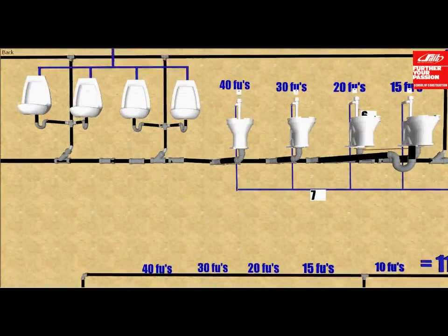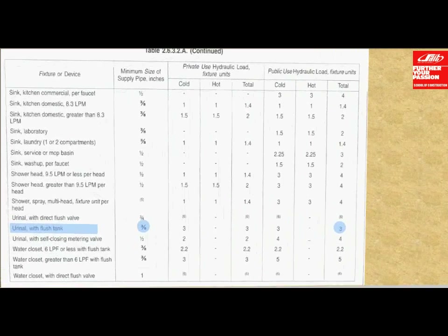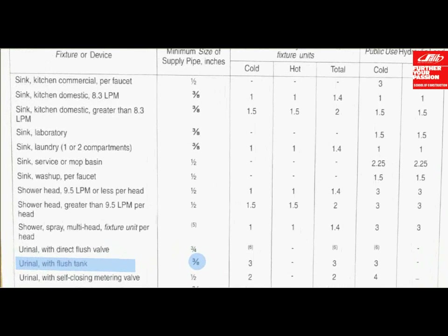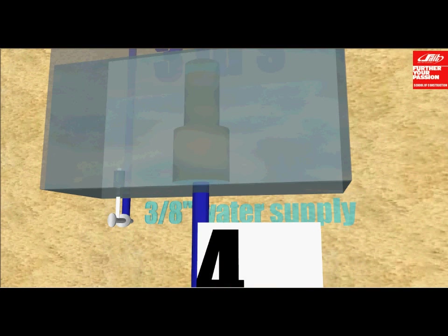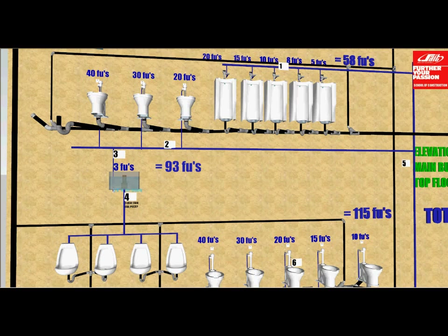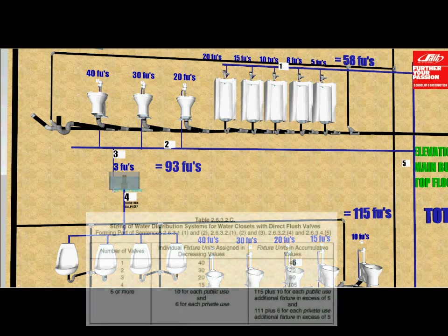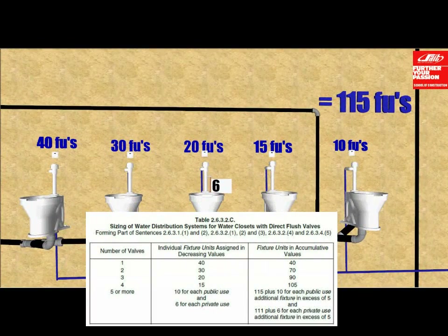We arrived at the 3 fixture unit load for the urinal flush tank by looking at table 2632A. On the farthest right column, it shows a hydraulic load of 3 fixture units. On the left, the minimum supply size is three-eighths of an inch — that is for the supply tube downstream of the R19. As illustrated, the supply tube is three-eighths of an inch, and this water supply is downstream of the R19 feeding the urinal flush tank.